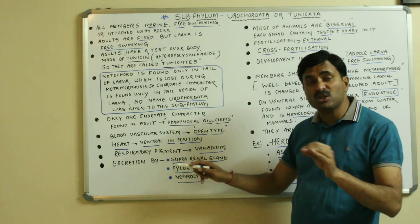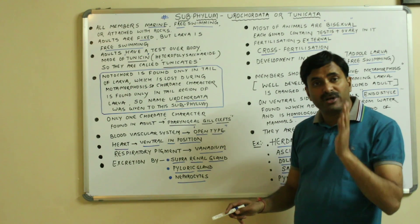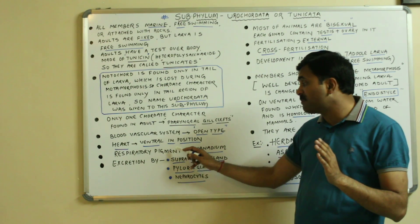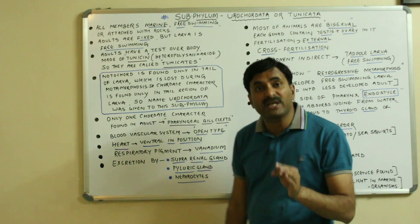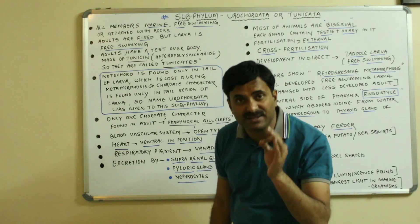Respiratory pigment is not the hemoglobin just like the higher chordates. They have a respiratory pigment known as vanadium which is found in special purple cells called the vanadocytes.